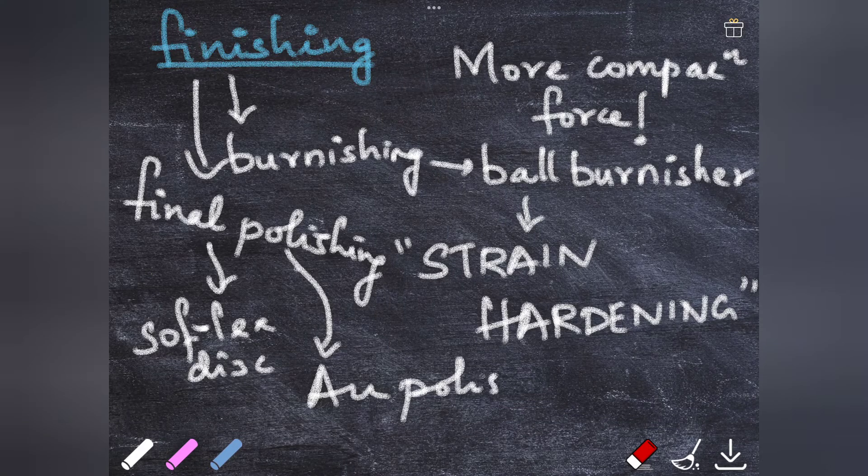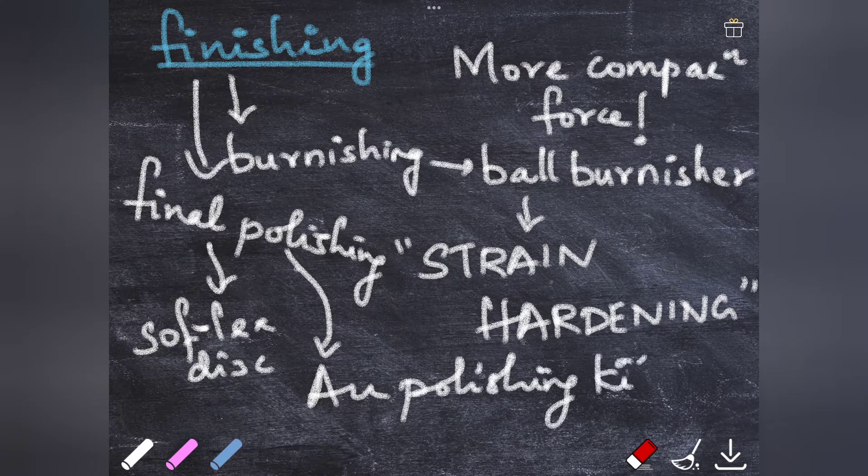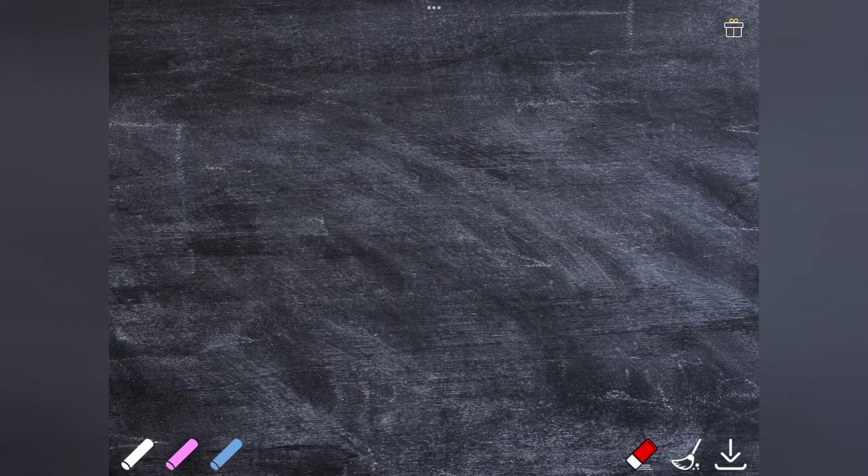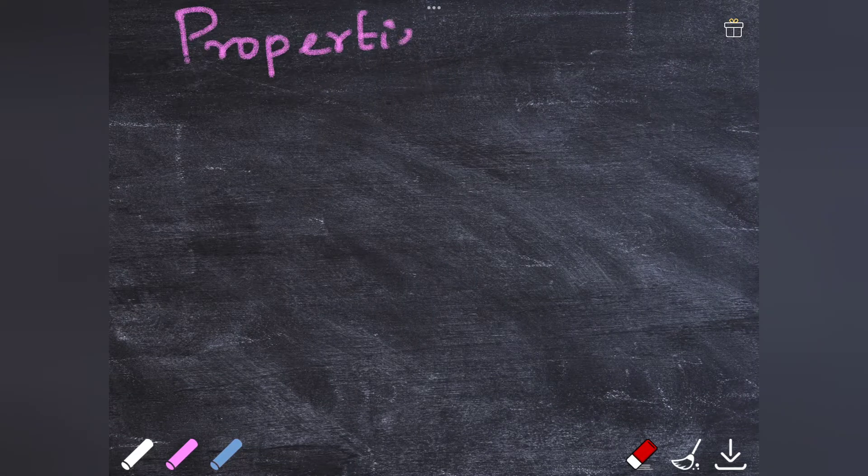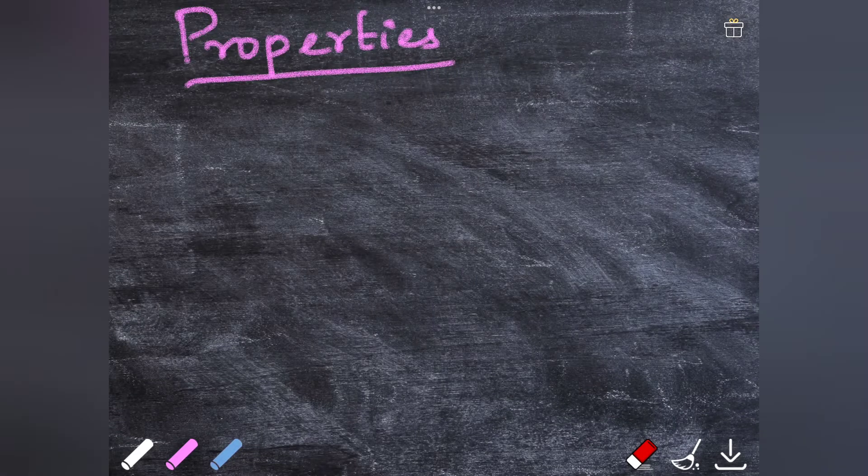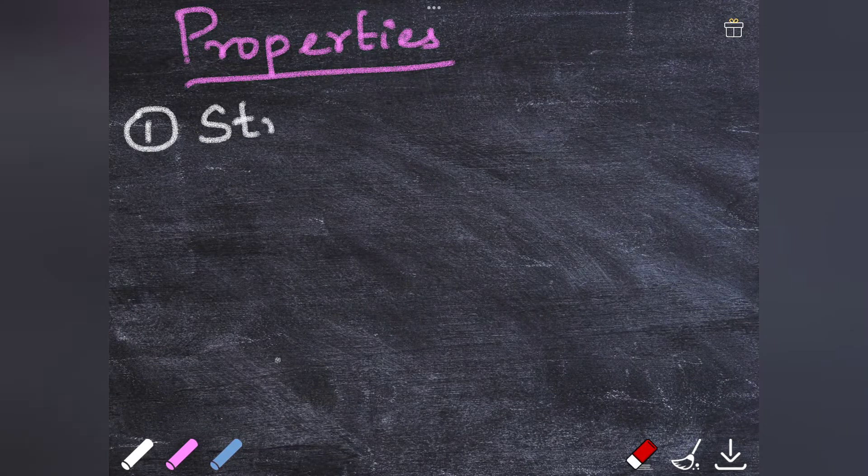Or we can use a commercial gold polishing kit. This is all about the manipulation. Now let's go to the last topic, which is the properties of the compacted gold.